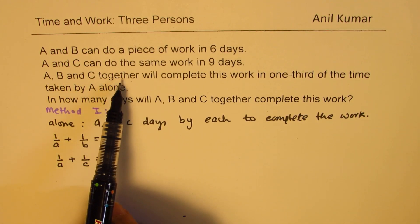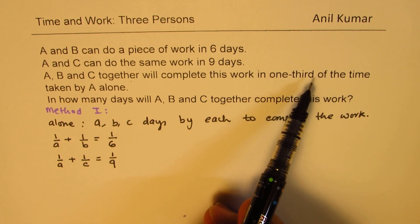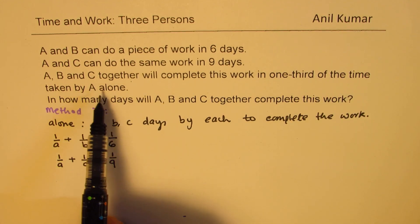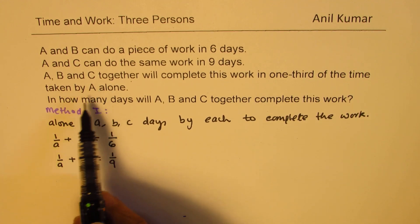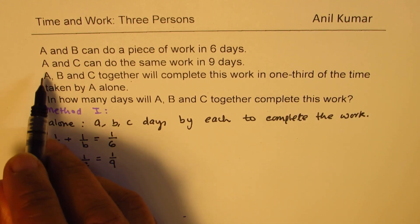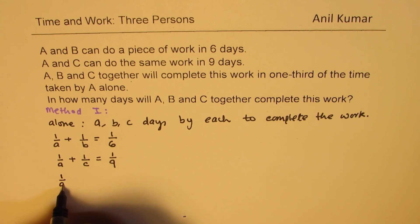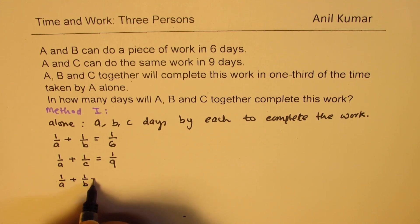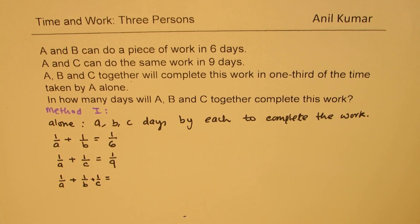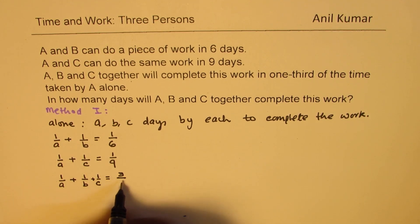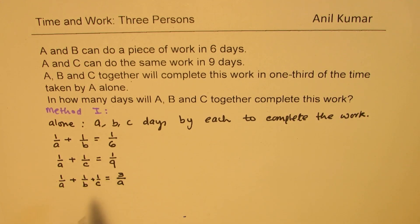Third equation: A, B, and C together will complete this work in one third of the time taken by A alone. That means A takes three times the time. So when they work together, one over A plus one over B plus one over C equals three over A. Because the time is one third of A, the reciprocal gives us three over A. So we have our three equations to work with.